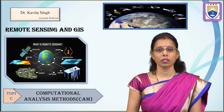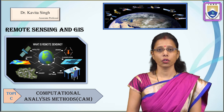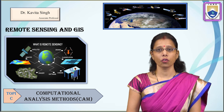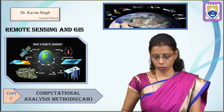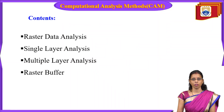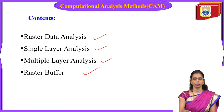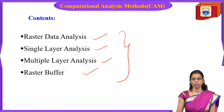Today we are going to discuss computational analysis methods. Computational analysis methods deal with data received from satellites through aerial photographs, which is in the form of raster data — in grid format. The contents we will cover are: raster data analysis, single layer analysis, multiple layer analysis, and raster buffer.